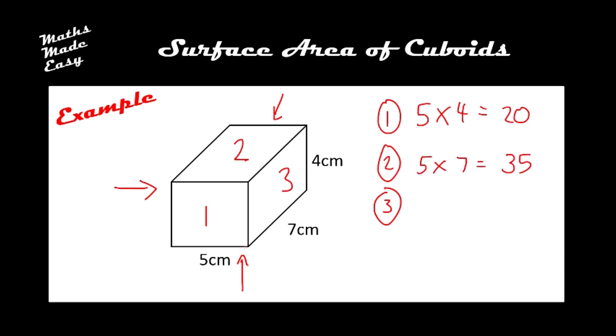And then finally number 3 here, we've got 7 by 4, so 7 times 4 equals 28.